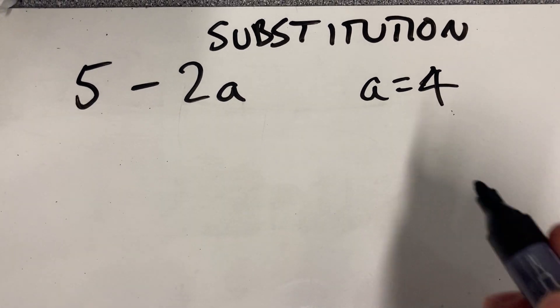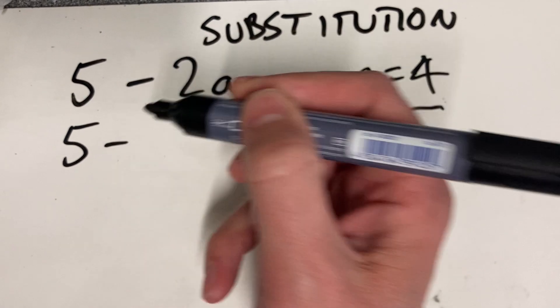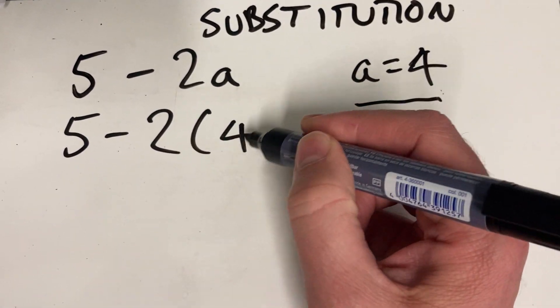5 minus 2a, and we're going to replace the a with 4. Okay, so wherever I see an a, I replace it with 4.